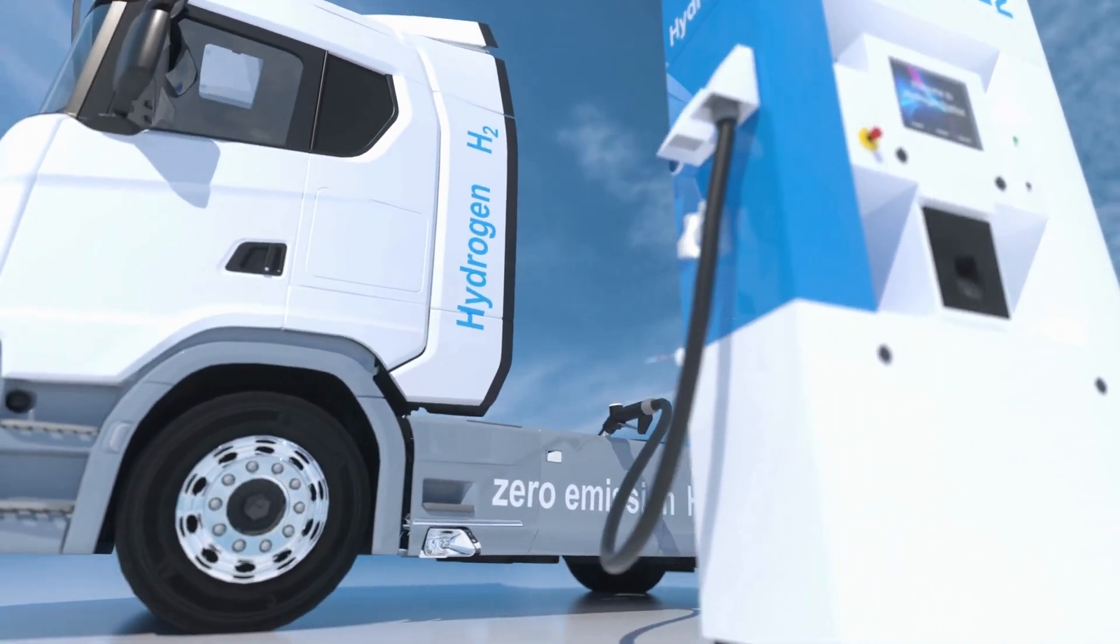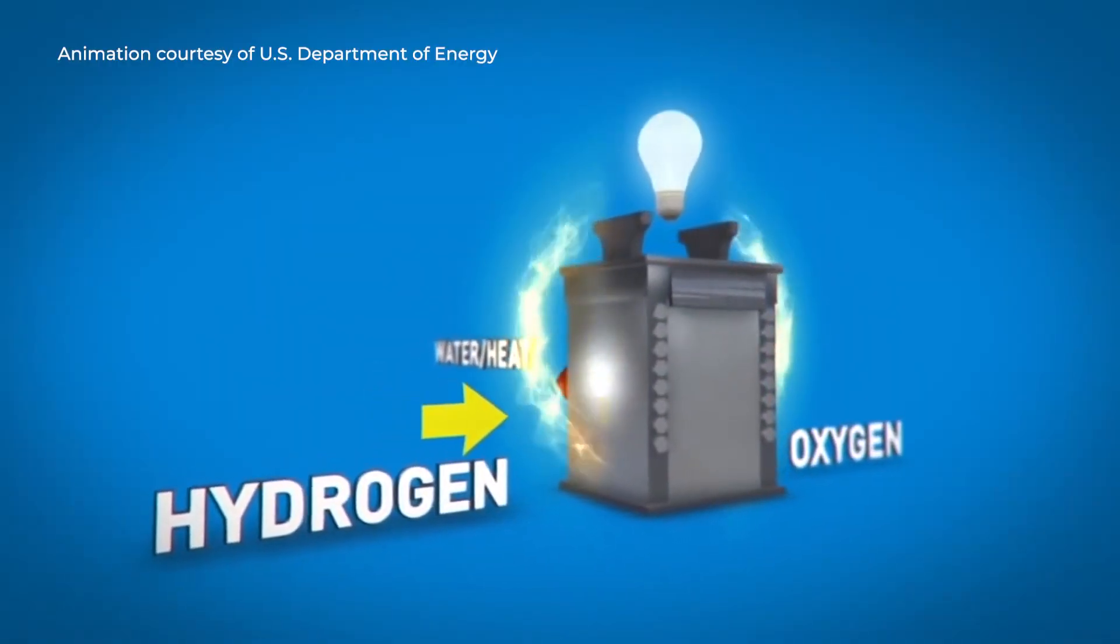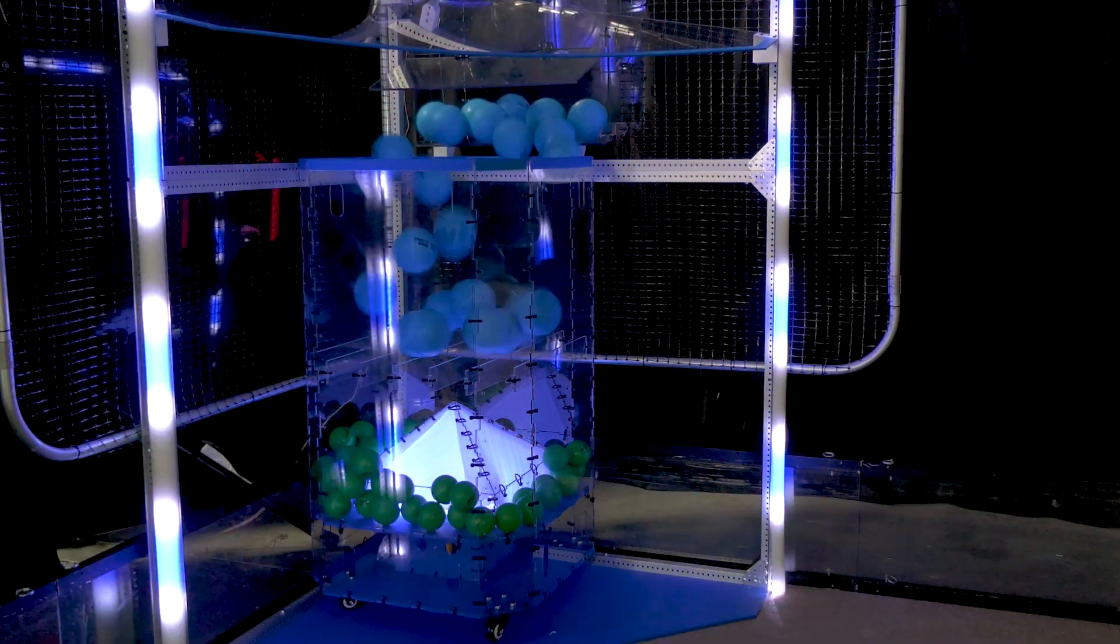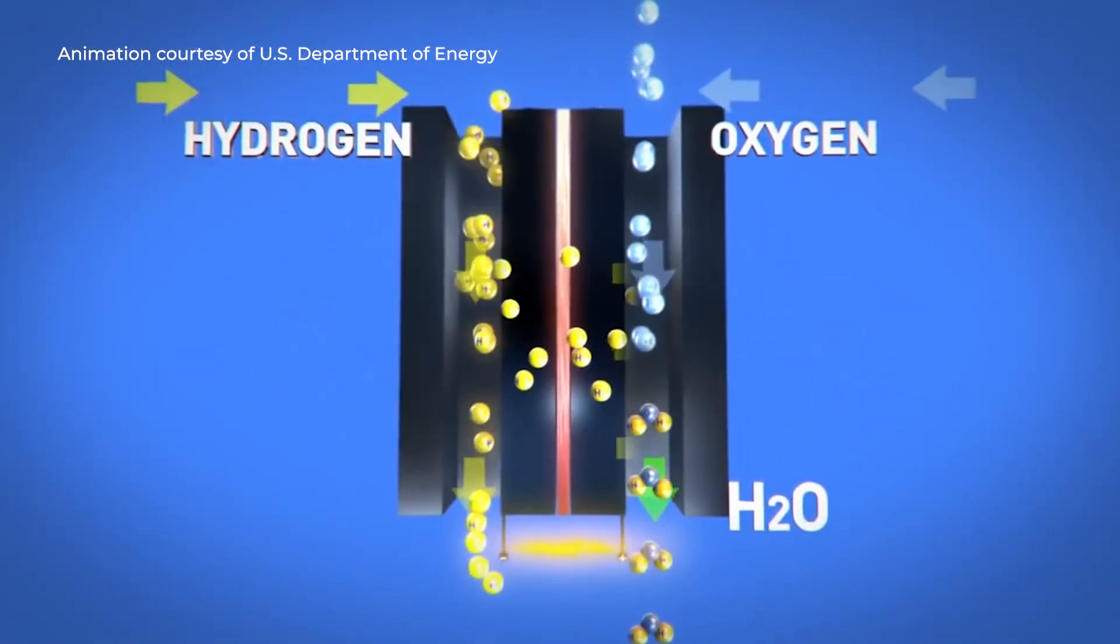Combustion of hydrogen is less efficient due to heat losses, while combining hydrogen and oxygen in a fuel cell to produce electricity is the most efficient method. The best part is that the only byproduct, besides electricity and heat, is water.